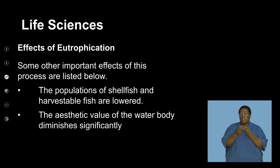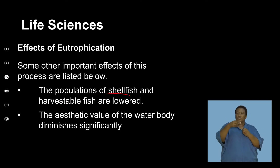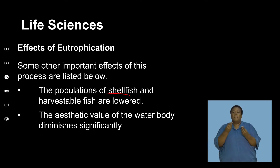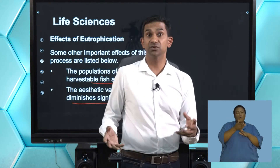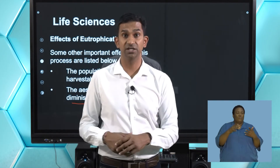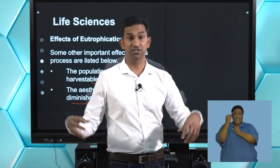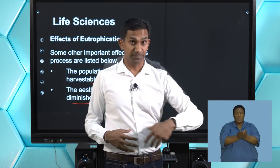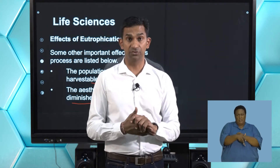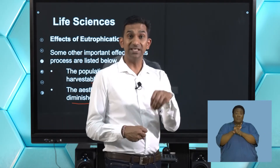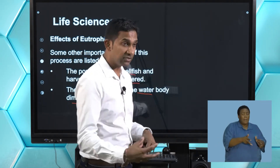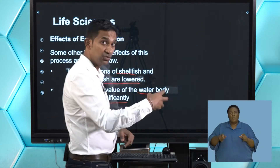Populations of commercially harvested shellfish are lowered. The aesthetic value of the water body diminishes significantly. Industries such as boating and water sports are all affected by algal growth and eutrophication. The impact is not just on the water body itself, but also on industries and the livelihoods of people who inhabit or use these water bodies.